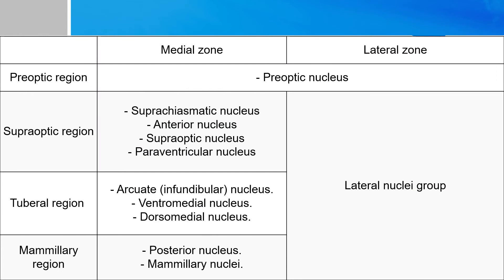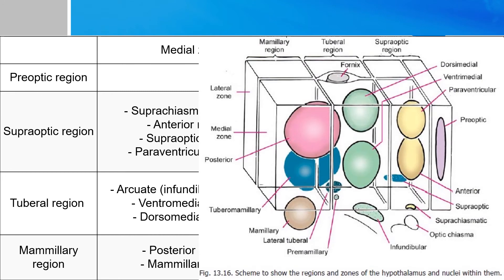The hypothalamic nuclei can be thought of as a grid-like structure. It can be separated into a medial and a lateral part, and anterior-posteriorly into four major sections. The structure that separates the medial and lateral zones is the fornix. So with the fornix sitting in the middle, the preoptic region is the anteriormost region of the hypothalamus, abutting the lamina terminalis.